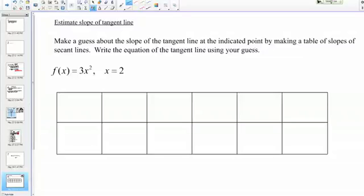Let's do an example about estimating the slope of the tangent line. Here are the directions. Make a guess about the slope of the tangent line at the indicated point by making a table of slopes of secant lines, and then write the equation of the tangent line using your guess. Our equation in this case is f of x equals 3x squared, and the point we're interested in is x equals 2.